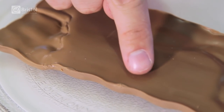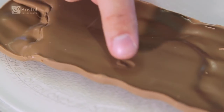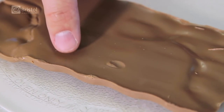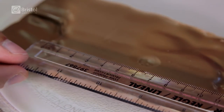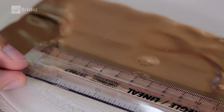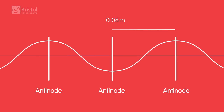The melted parts are where the anti-nodes are in our microwave — the hottest parts — and the solid parts are where the nodes are, so there wasn't very much microwave energy at all. We want to measure the length of a single wave, so take your ruler and measure between two of the anti-nodes. That's roughly six centimeters, but this is just the distance between two adjacent anti-nodes — a peak and a trough.